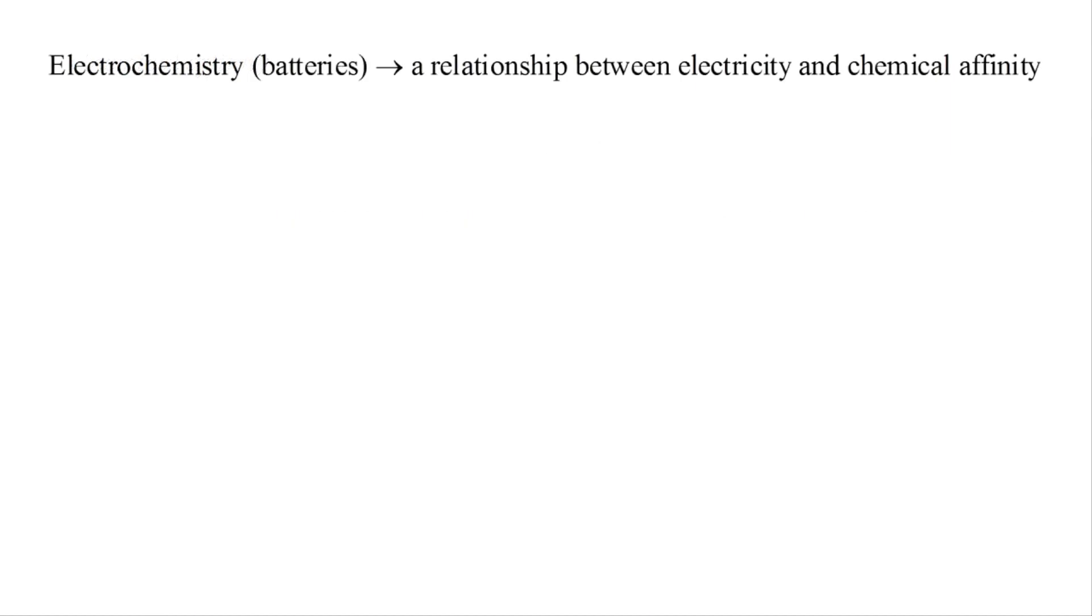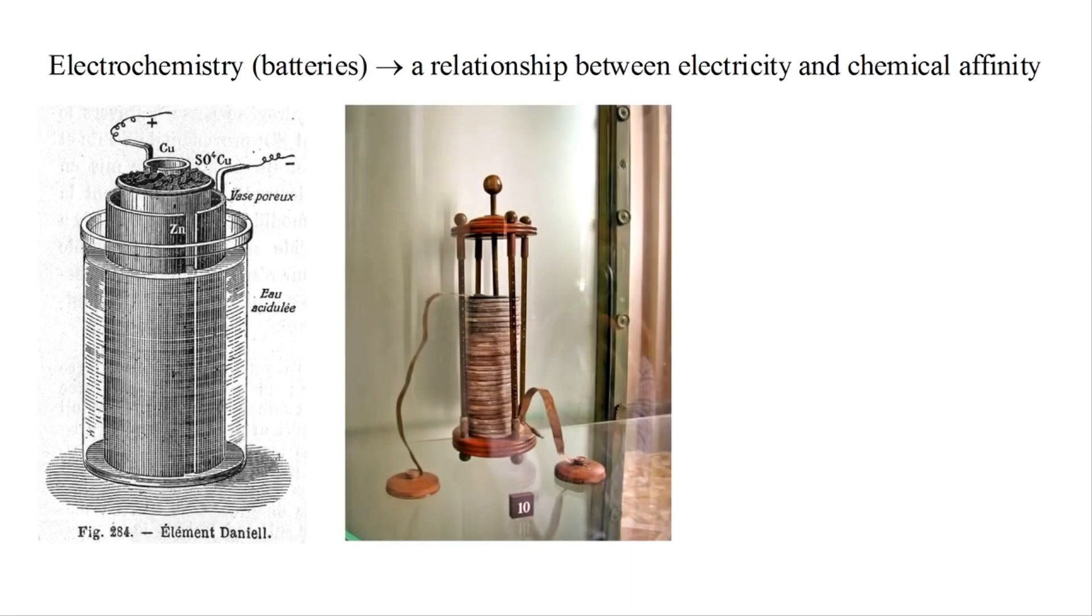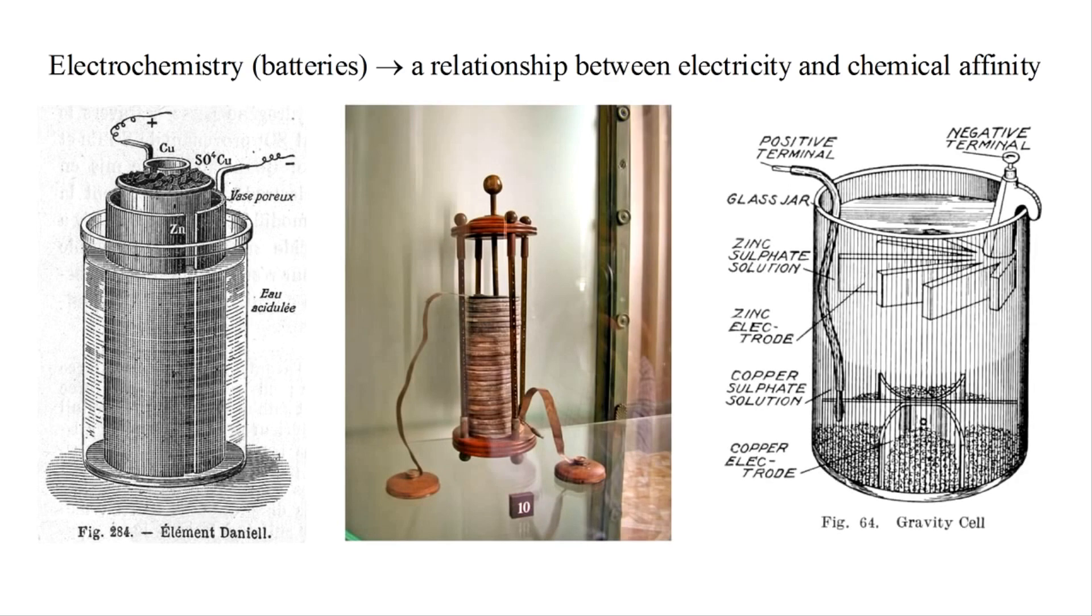During the 19th century, extensive experimentation with electrochemistry, especially with various types of batteries, strongly indicated an intimate relationship between electricity and chemical affinity. With the discovery of the electron in 1897, the process became clearer. Atoms contain positive and negative charges, and electrical forces between those charges are somehow responsible for chemical affinity.